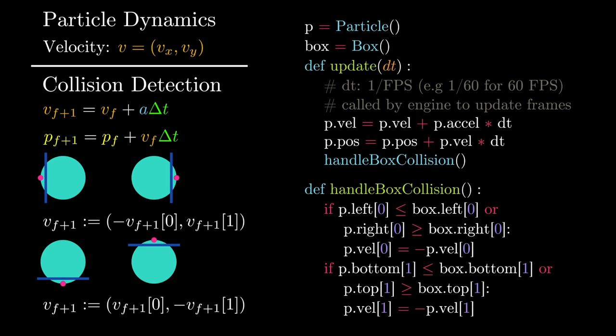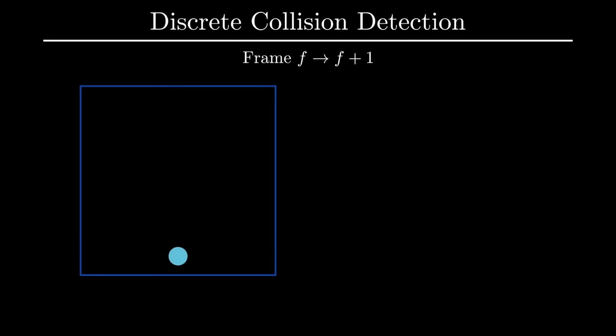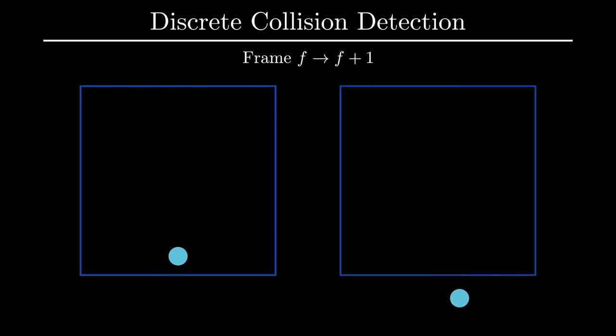So what we just implemented is one example of discrete collision detection. Before we add complexity, it's worth taking some time to address some of its limitations. Some of you may be thinking: what happens if between one frame and another, the particle completely passes through an edge? This can happen, especially if the particle is moving quite fast. This issue is so common that it's actually given a name: tunneling.